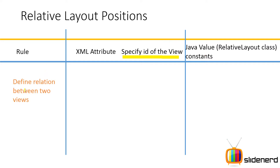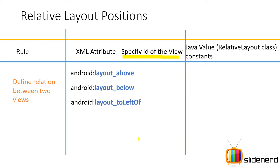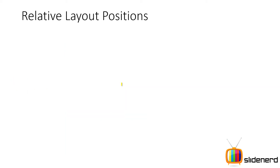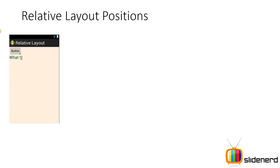So let's define the rules — the relationship between two views. What are the attributes? They are above, below, to left of, or to right of. These are the corresponding Java values for each of them. You simply specify that this view should be above that one, or to the left of this one and stuff like that. Let me show you some examples and get you guys up and running.